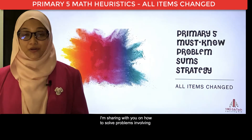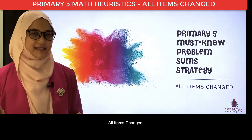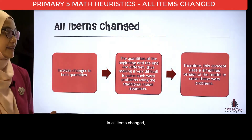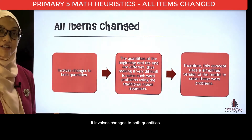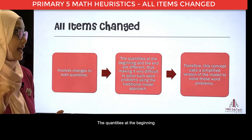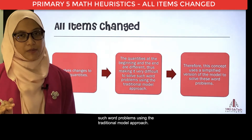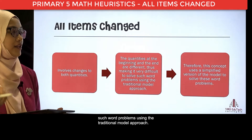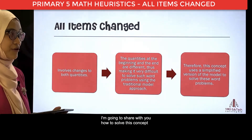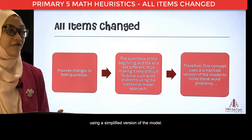In this video, I'm sharing with you on how to solve problems involving all items changed. In all items change, it involves changes to both quantities. The quantities at the beginning and the end are different, thus making it difficult to solve such word problems using the traditional model approach. Therefore, in this video, I'm going to share with you how to solve this concept using a simplified version of the model.